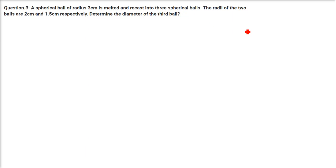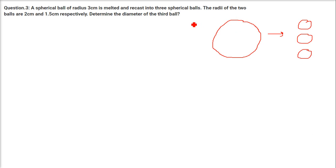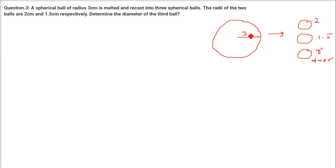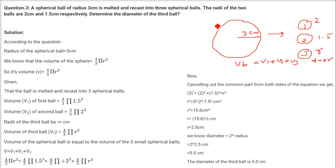A spherical ball of radius 3 cm is melted and recast into 3 spherical balls. The radii of two of the balls are 2 cm and 1.5 cm. What is the diameter of the third ball? Let the radius of the third ball be r; we'll find diameter as 2r later. The volume of the bigger ball equals V1 + V2 + V3.